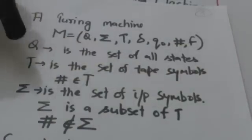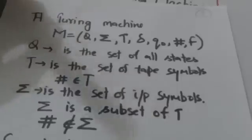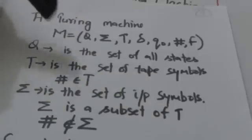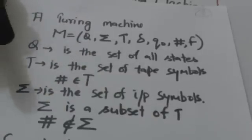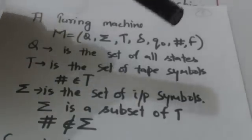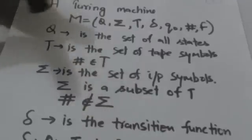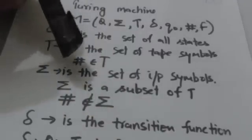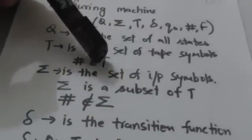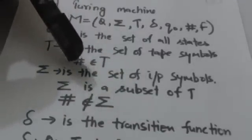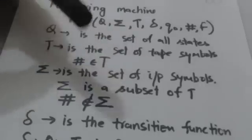Here Q is the set of all states of Turing machine M. T is the set of tape symbols. The blank symbol belongs to set T, meaning the blank symbol is a tape symbol.